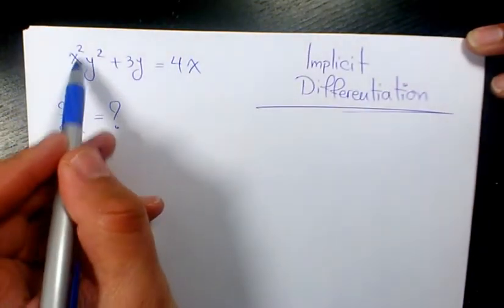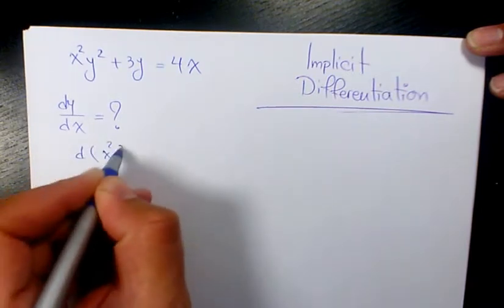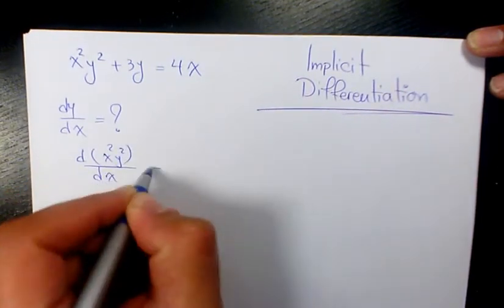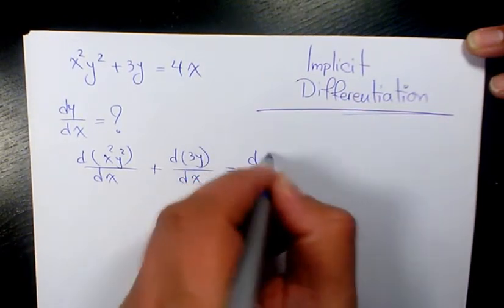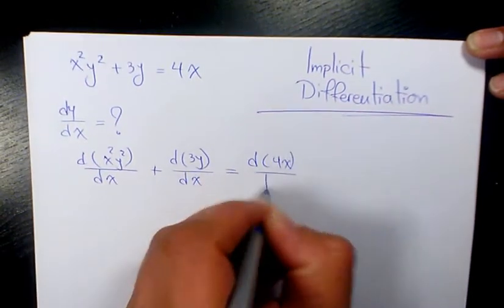The derivative of x²y² with respect to x plus the derivative of 3y with respect to x equals the derivative of 4x with respect to x.